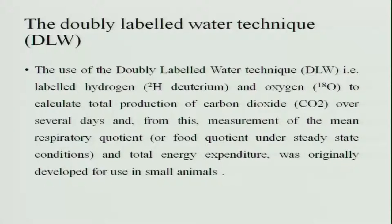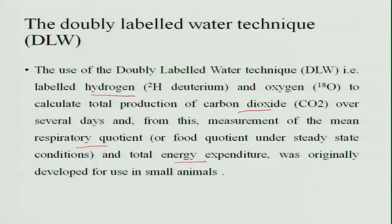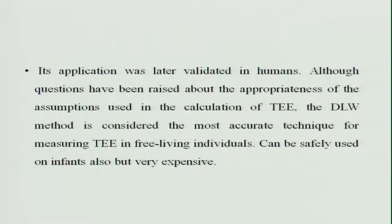The doubly labeled water technique uses hydrogen — that is deuterium — and oxygen-18 to calculate the total production of carbon dioxide over several days. From this, the measurement of mean respiratory quotient or food quotient under steady state conditions and the total energy expenditure are derived. It was developed in small animals and later validated in humans. It has become an accurate method and can be safely used in infants, though measurement is expensive due to the use of deuterium and oxygen-18.